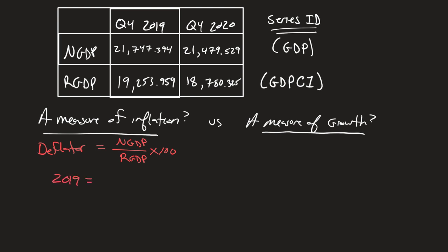So let's go ahead and do 2019 for the deflator. 2019 is going to equal 21,747.394. These are in millions of dollars on FRED. So 21,000 million would be a trillion. And then the real GDP is what we would divide it by in 2019, which would be 19,253.959. We multiply that by 100. And so in 2019, I plugged this into my calculator, I will get 112.950.